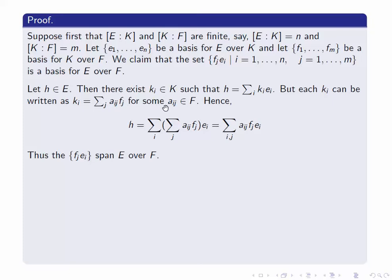Now we substitute this summation back into the formula, and we get that h is this double summation, which we can rewrite as h = Σᵢ,ⱼ aᵢⱼfⱼeᵢ. When we've written it like that, that's exactly the statement that h lies in the span of the set {fⱼeᵢ}. Since h was arbitrary, the fⱼeᵢ span E over the base field F. That proves the spanning part.